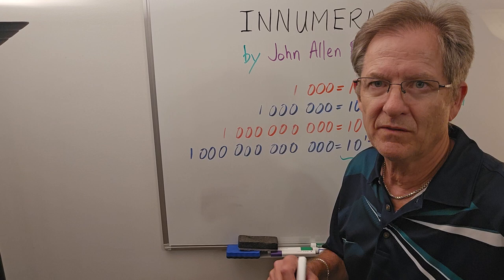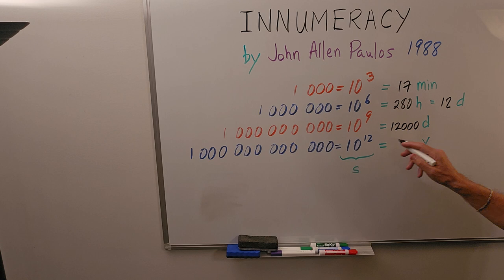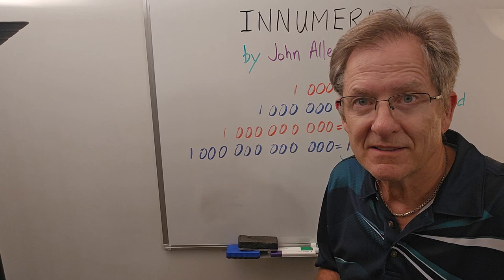A billion seconds is about 12,000 days. Now the easiest way to get that, of course, is just multiply 12 days by a thousand, because to go from a million to a billion, I'm multiplying by a thousand, so just multiply that by a thousand. And if you have a trillion seconds, that's about 32,000 years.